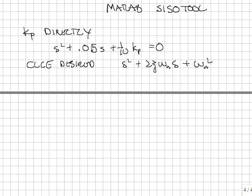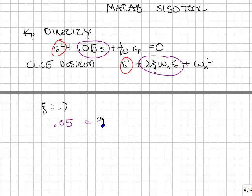For my specifications, I know that zeta is equal to 0.7. So I can now match coefficients. So I match the coefficients of the system. s squared to s squared. This term, the s term, and the s term. So that means that 0.05 must be equal to 2 times 0.7 times omega n. And I match this term. And that tells me that 1 tenth kp must be equal to omega n squared. We now have two equations and two unknowns.